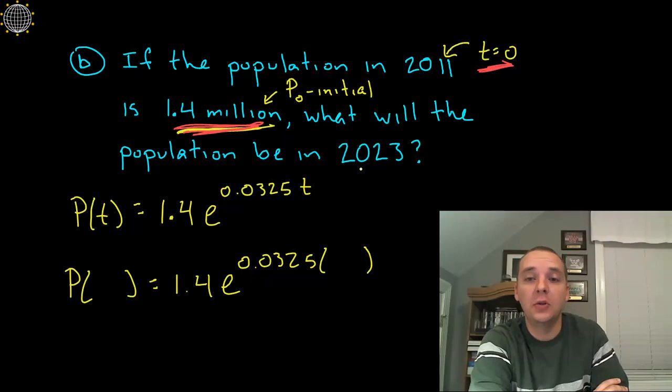Now I'm not going to plug in 2023, that's massively too big. What would the T actually be assuming that 0 corresponds to 2011? Well, the difference between these two years would be 12 years. So we'll let the T be 12.